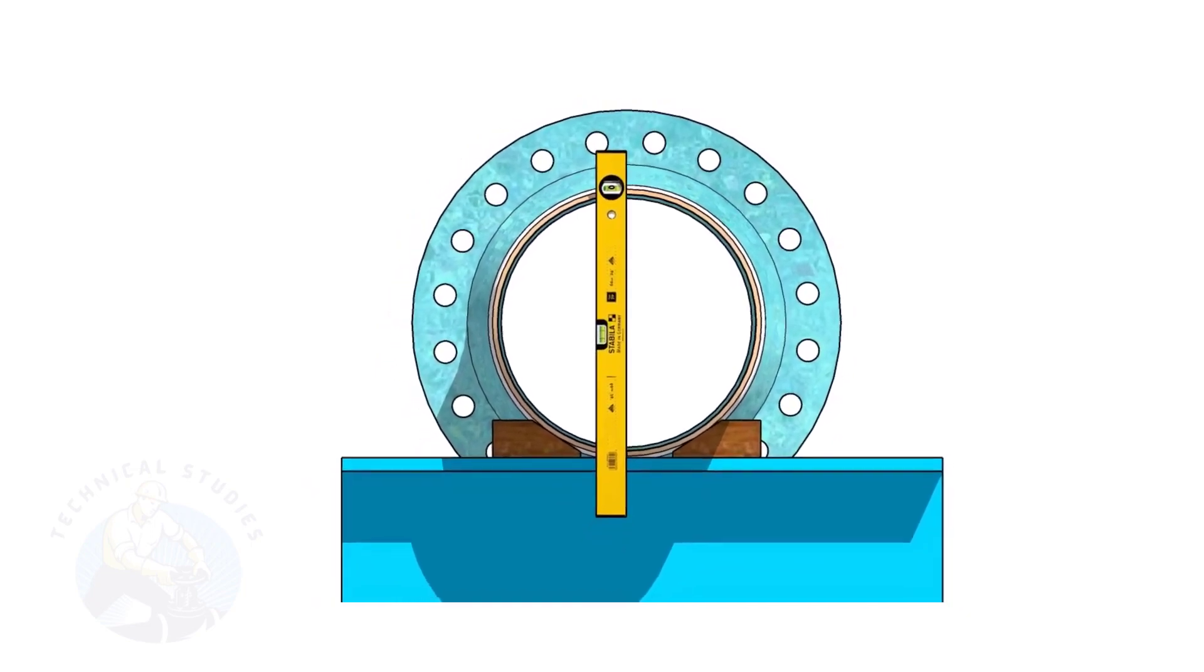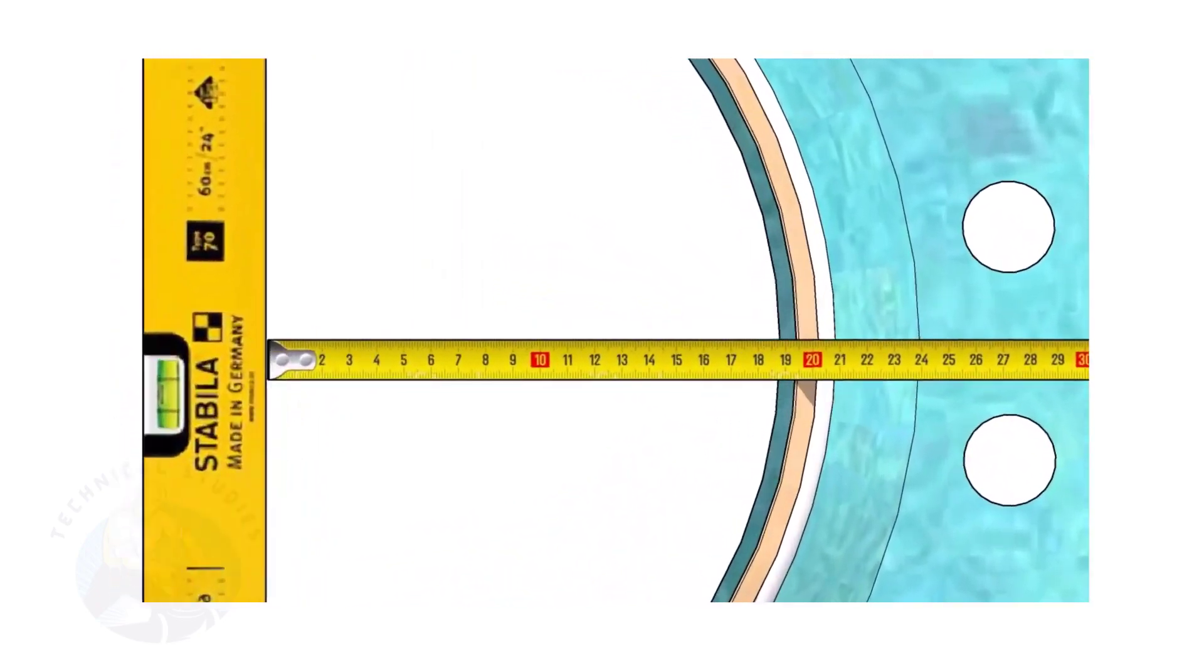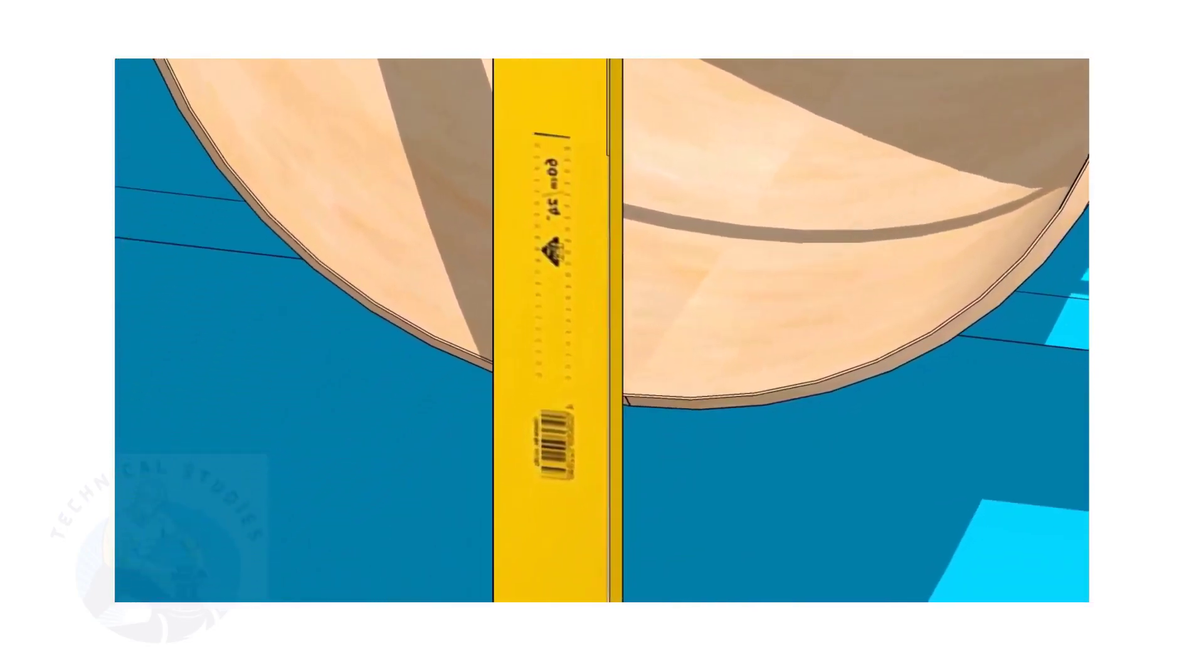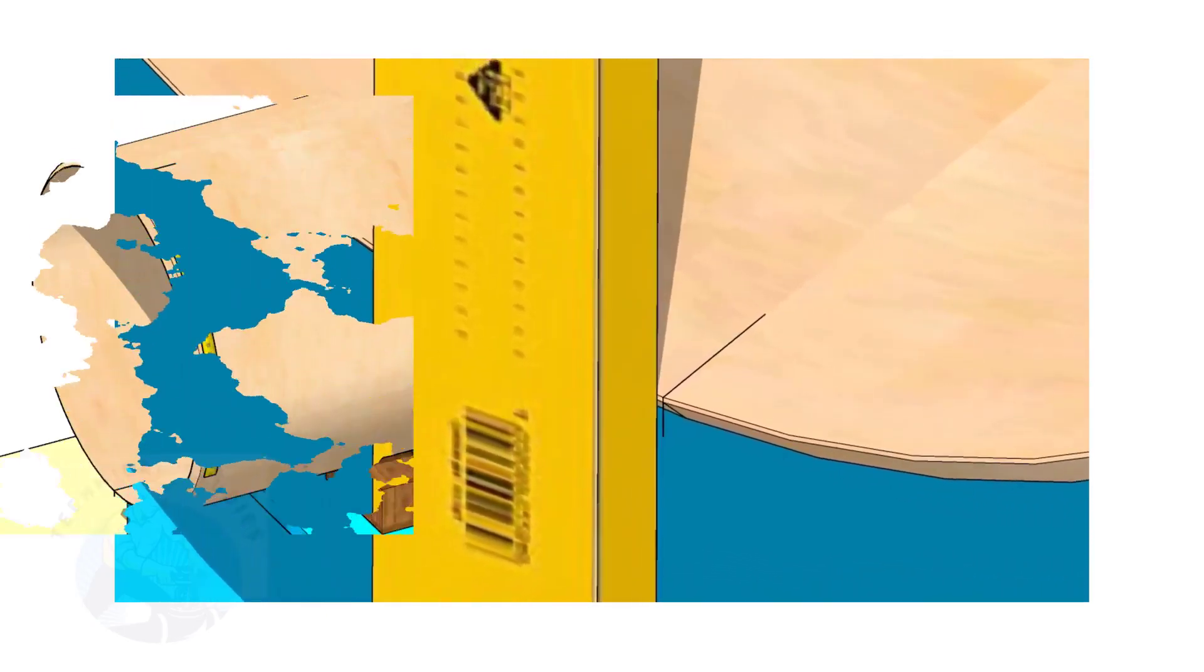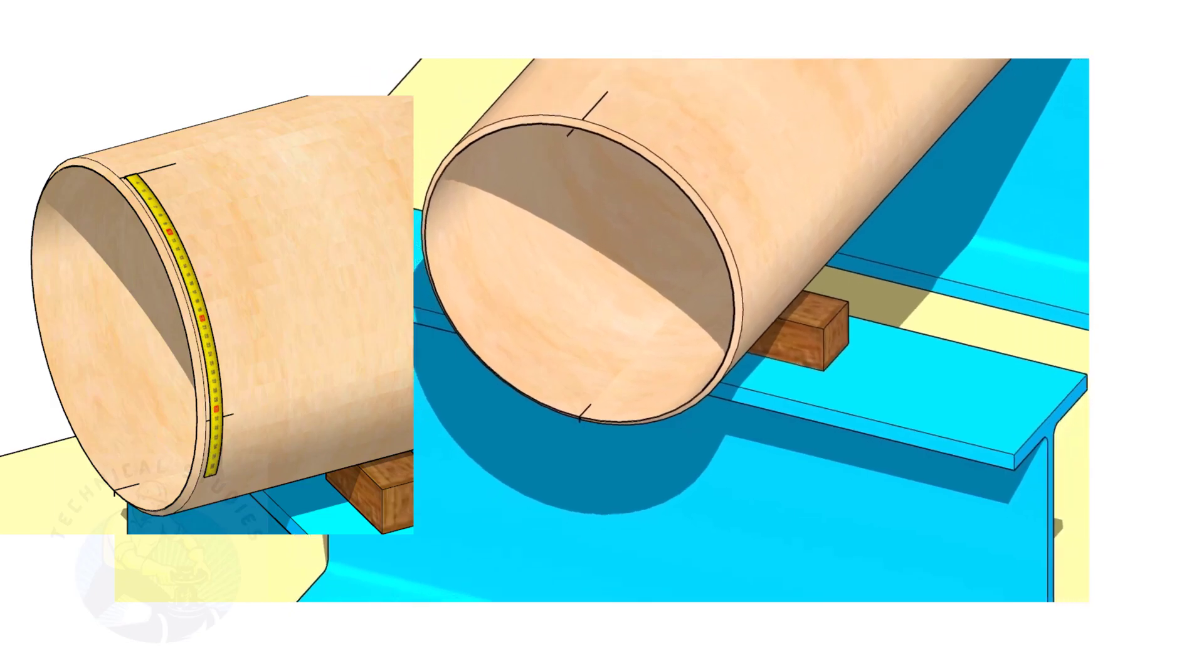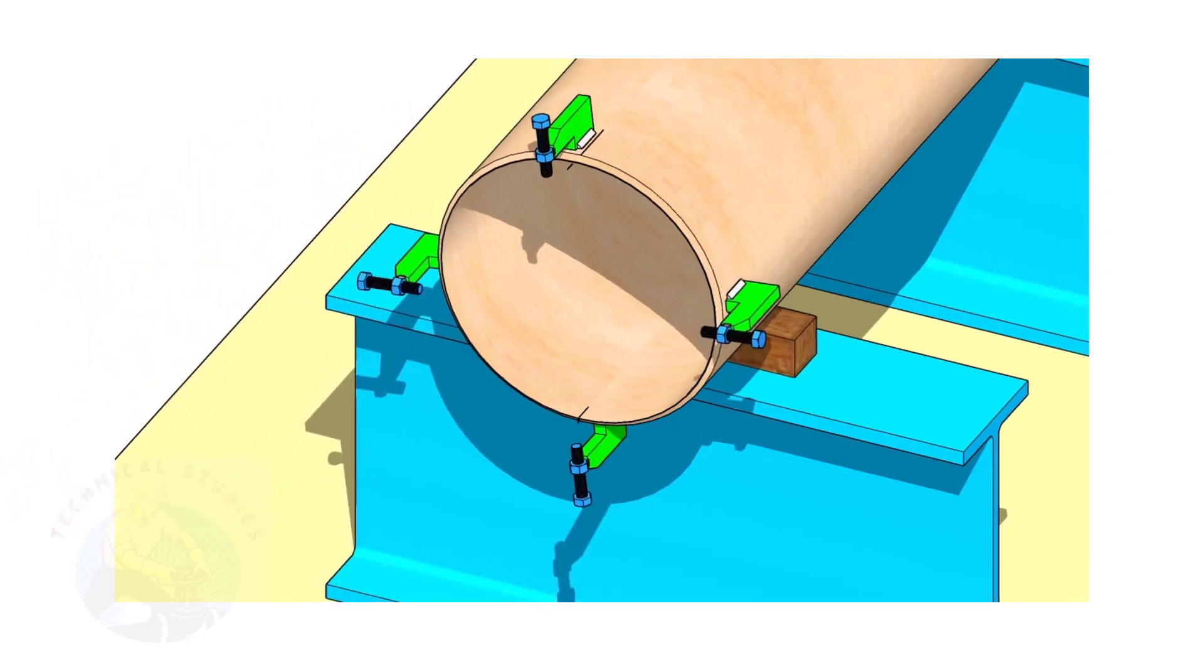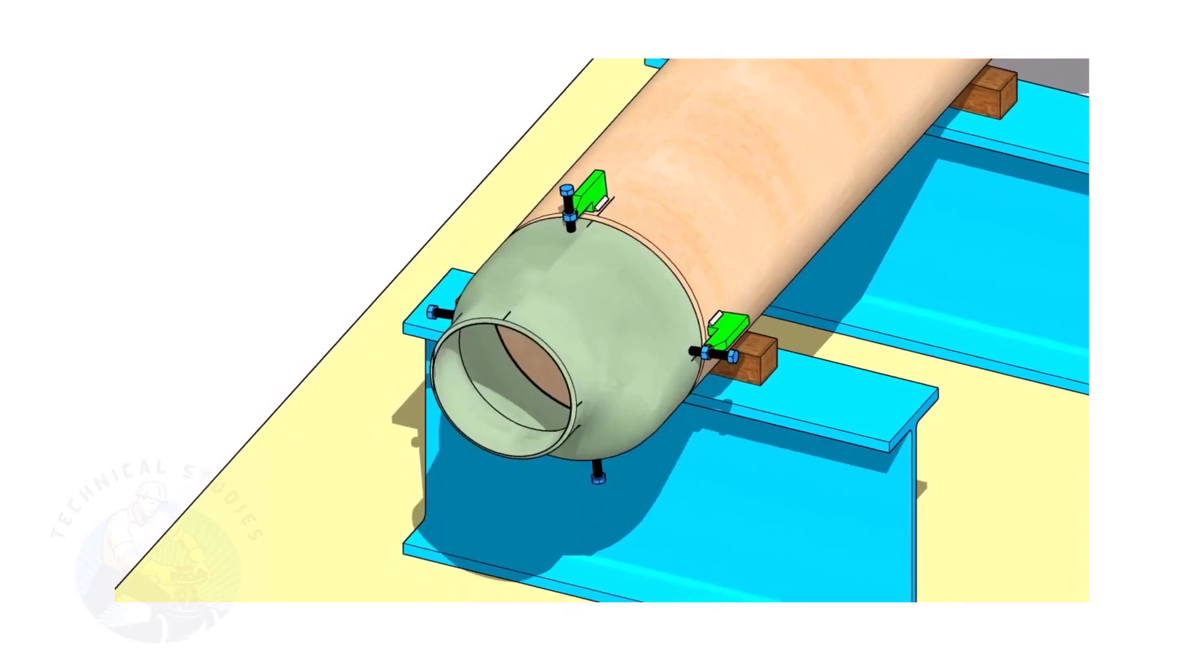Hold the spirit level vertically and transfer the top center mark to the bottom side as shown. Mark the quarter circumference on both sides of the pipe. If you don't have a pipe aligning clamp, tack weld four numbered jack bolts 90 degrees apart as shown.